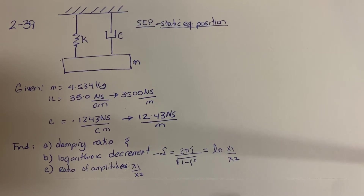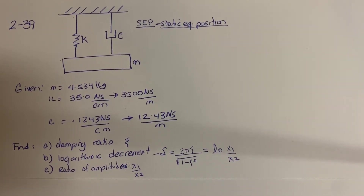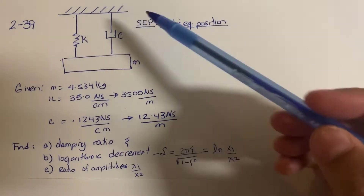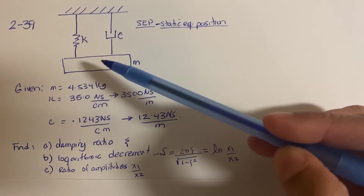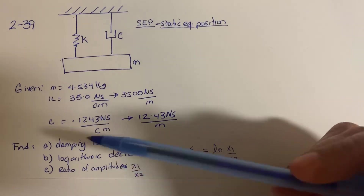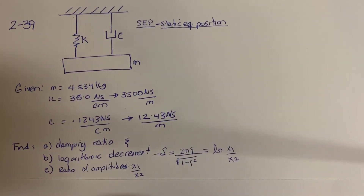Let's start by drawing a free-body diagram of the system. We notice that the forces acting on the mass are the force of the spring and the force of the damping. Notice that I did not include the weight because in static equilibrium, those forces are counterbalanced. So if I include all the static equilibrium forces in my equation, they will cancel each other — we don't need to include them. I'm analyzing this problem from the static equilibrium position downward when the system starts moving.